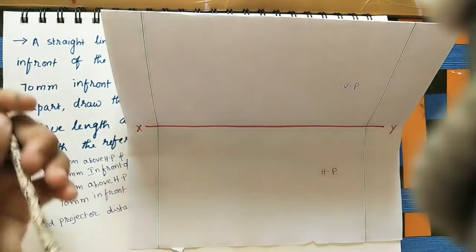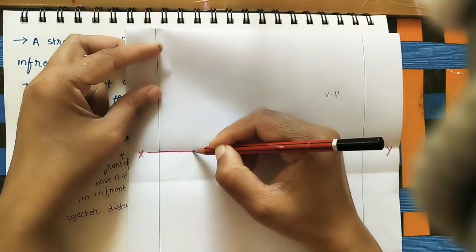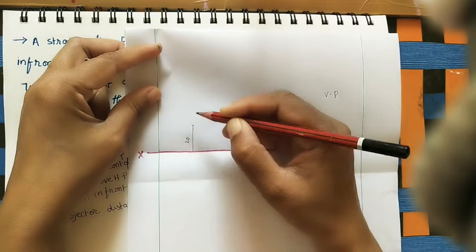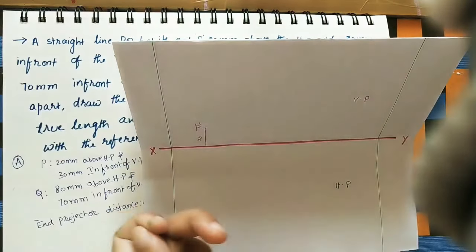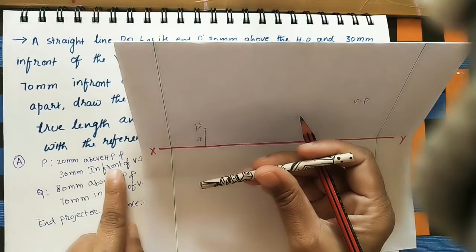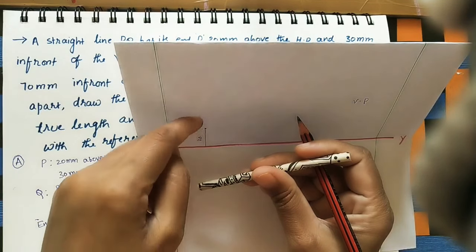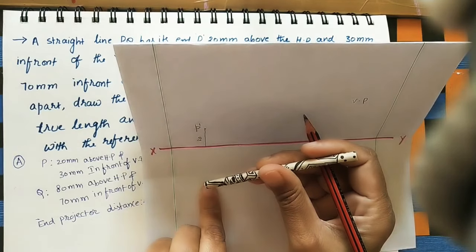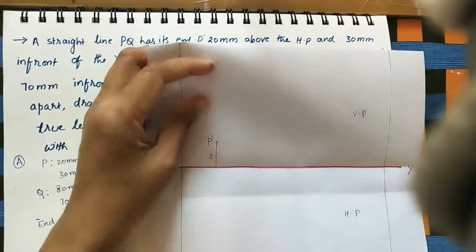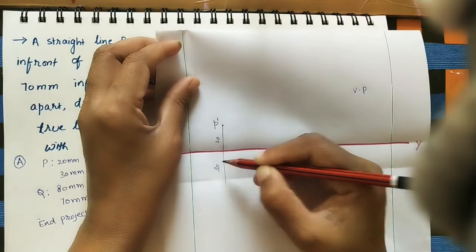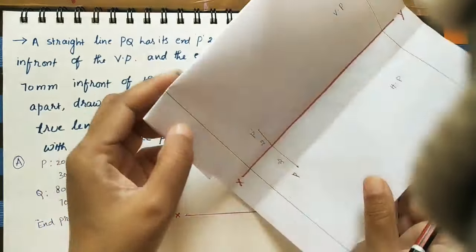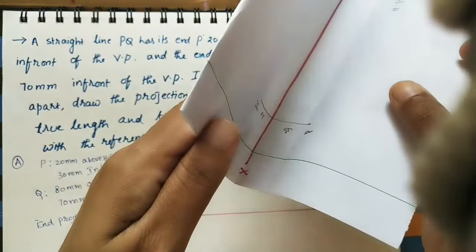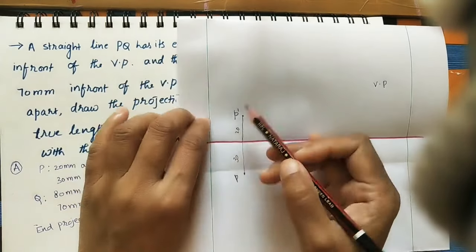Mark P-dash point — take about 20 mm above the XY line. For front views, we are using small letters with a dash. This is the front view of P point. And for the top view, we see the 30 mm gap below the XY line, showing the P point on the horizontal plane. On the same projector line, take 30 mm below — we can see small p. This is a 3D view; we are tilting the horizontal plane downward so that we can see both views on the same paper — this is called the 2D view.